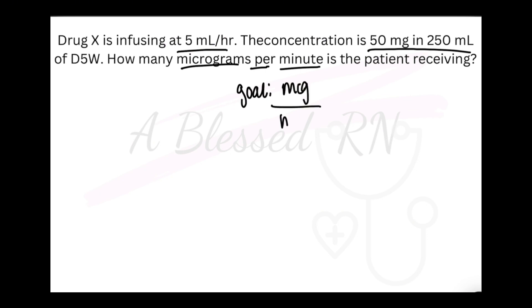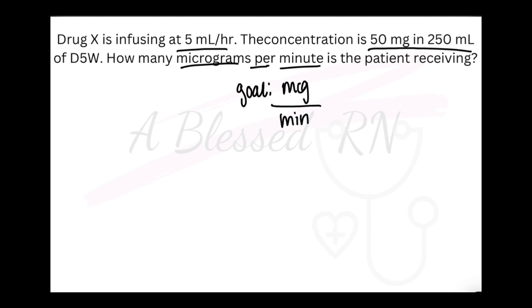My first step is to find the goal — what is it asking me to find? And that is going to be micrograms on the top and minutes on the bottom. Next, I will look for my puzzle pieces, or my relationships, whatever you want to call them.